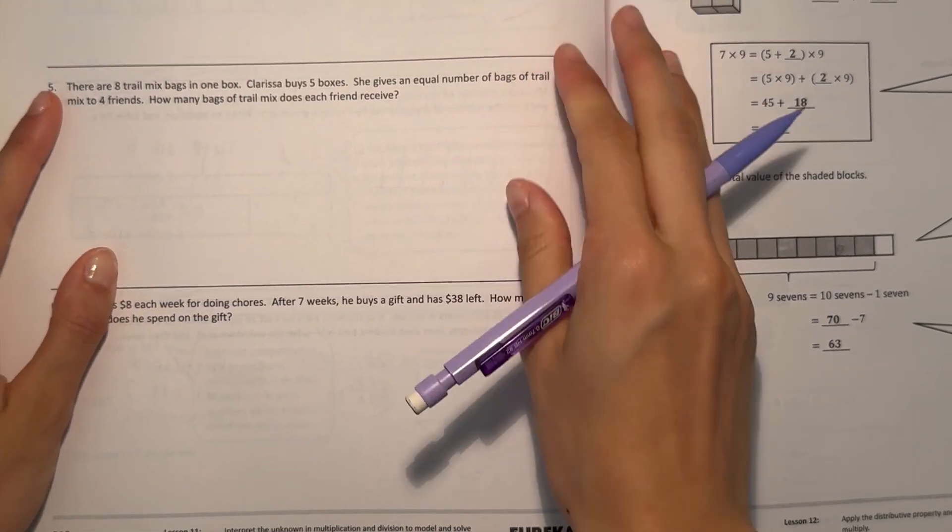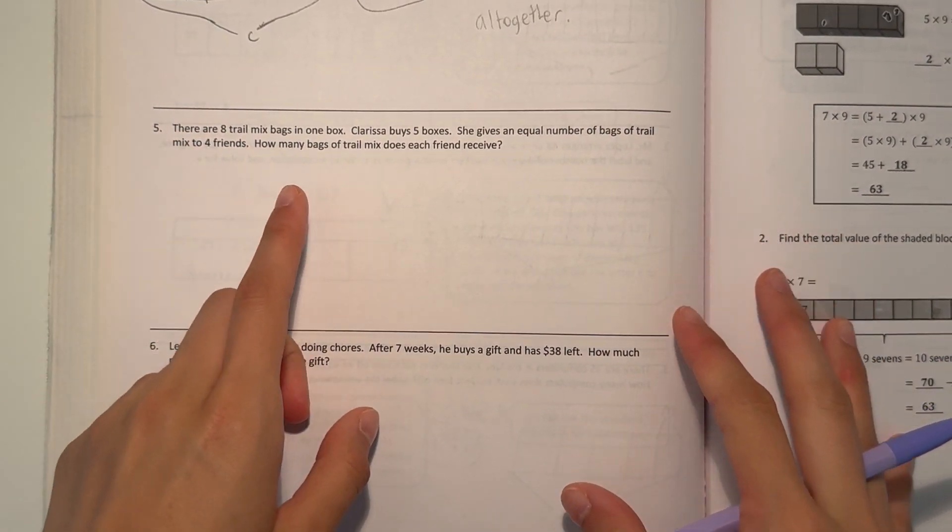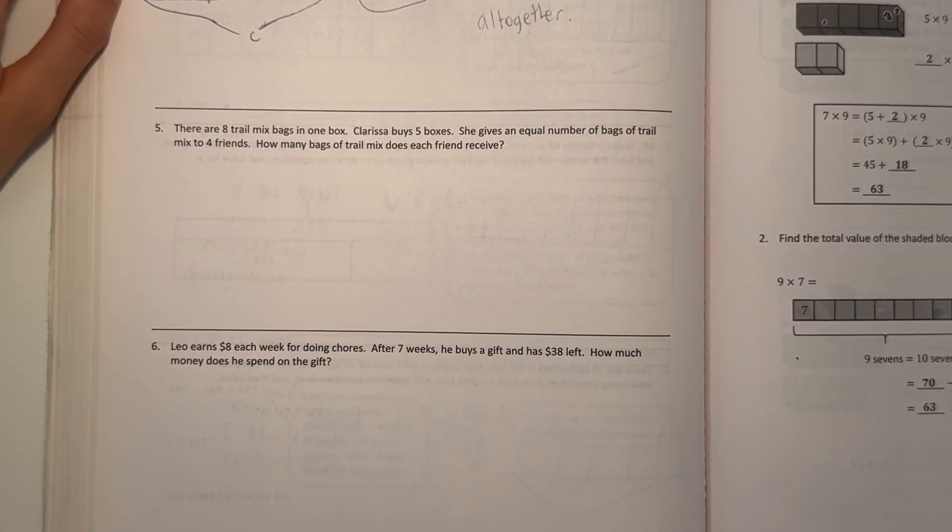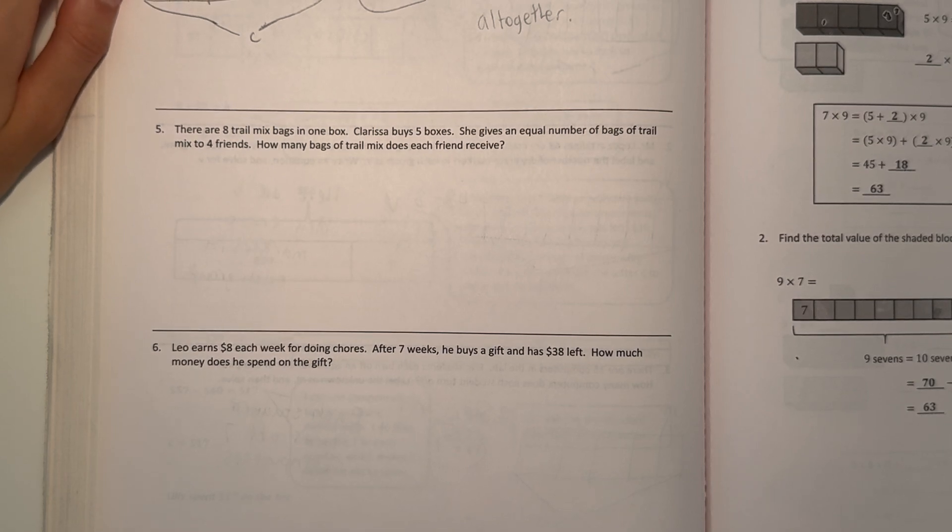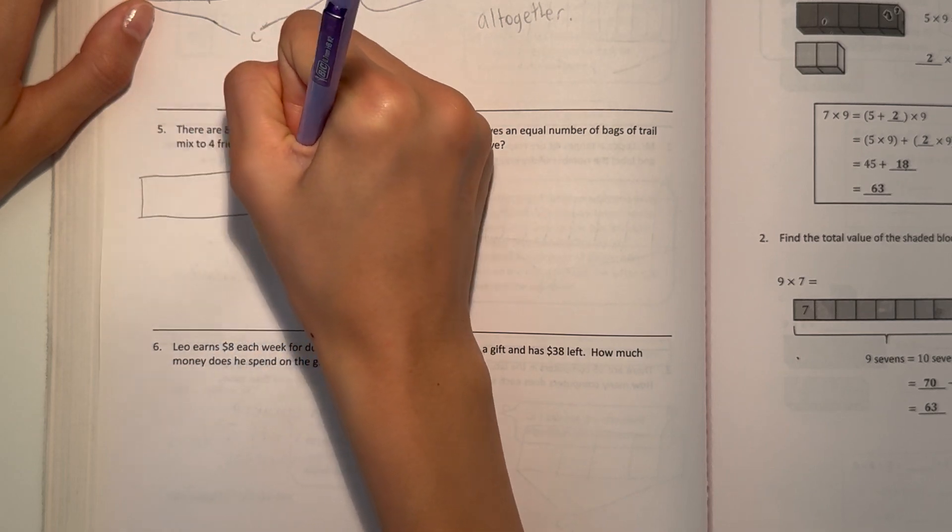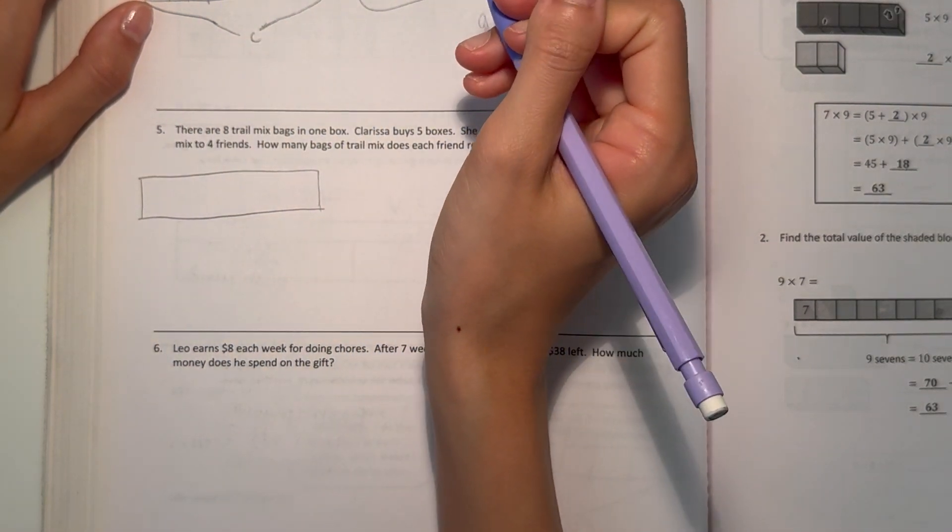Alright, number 5. There are 8 trail mix bags in 1 box. Clarissa buys 5 boxes. She gives an equal number of bags of trail mix to 4 friends. How many bags of trail mix does each friend receive? Alright, so let's first find out how many bags are in 5 boxes.